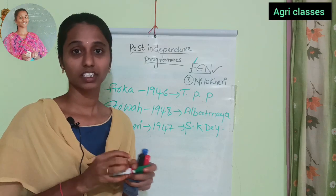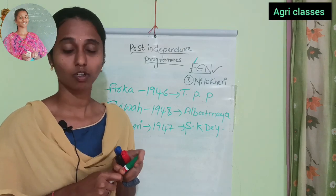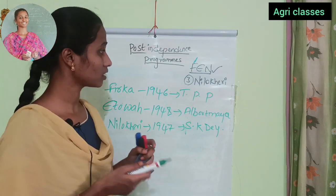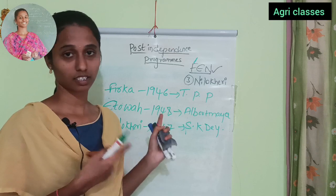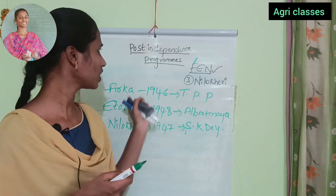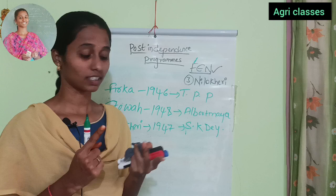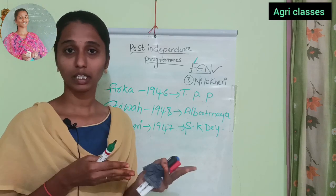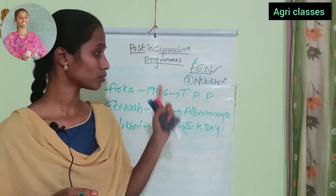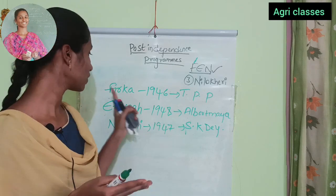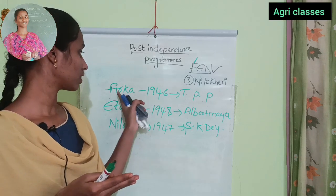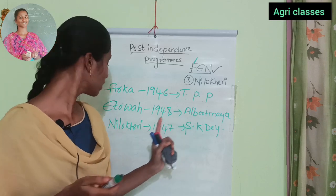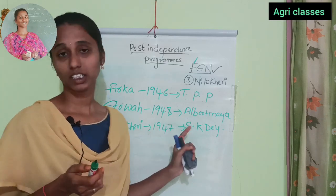So here are three important pre-independence development projects. If you have any questions, please comment in the comments box. To summarize: pre-independence projects are FIRKA (1946, Tangudori Prakasham Pantulu), ETAWA (1948, Albert Mayer), and Nilo Keri (1947, S.K. Dey). These will be discussed further in the next video.